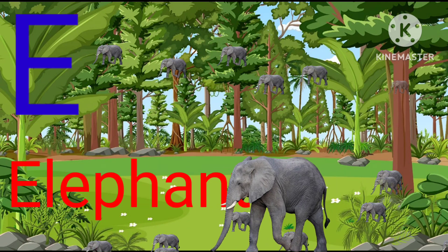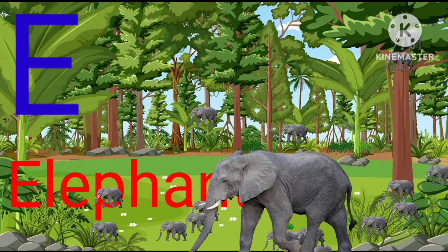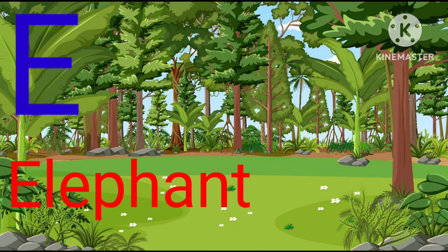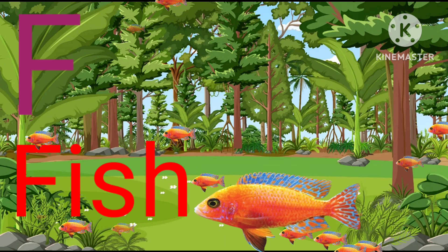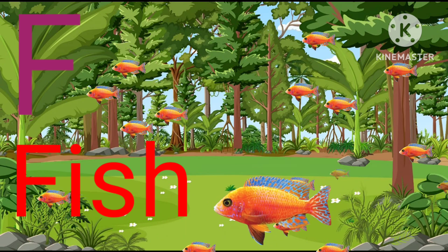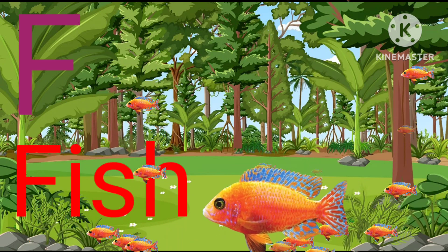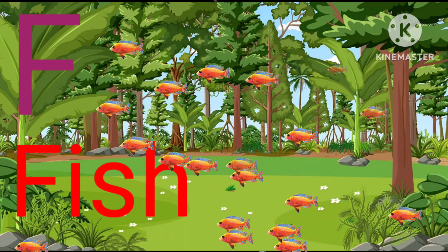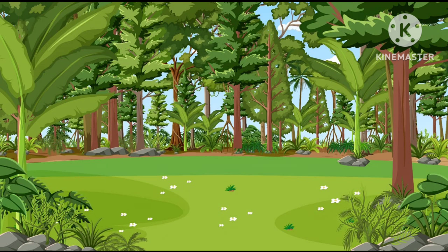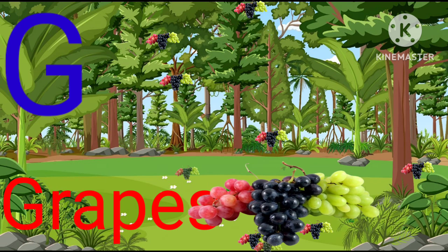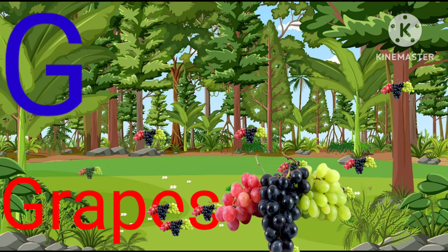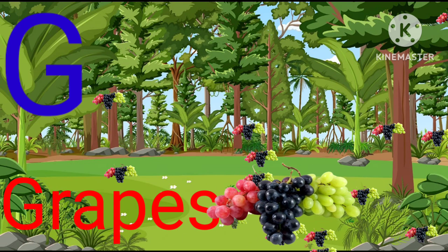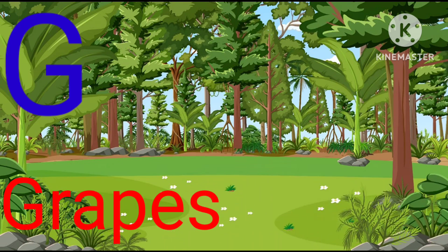E for elephant, elephant means hathi. F for fish, fish means machli. G for grapes, grapes means anggur.